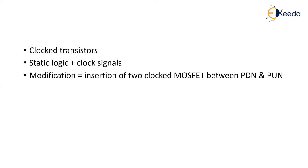Here we will be having clocked transistors. What is a clocked transistor? The gate of your MOSFET will be given with the clock signal, and that clock signal is going to activate or control your MOSFETs. You will be having a static logic together with your clock signals. We will be having both your pull-up network and your pull-down network together with clocked transistors — that is clocked CMOS, or C-squared MOS logic.